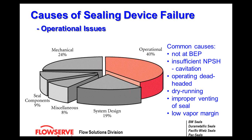Dry running can be confusing — you can have a dry run situation on the mechanical seal yet the pump was flooded. Think of a vertical pump orientation where the mechanical seal sits on top. If you don't have proper venting, an air bubble can form and won't evacuate the stuffing box chamber, causing the mechanical seal to fail through a dry run situation.